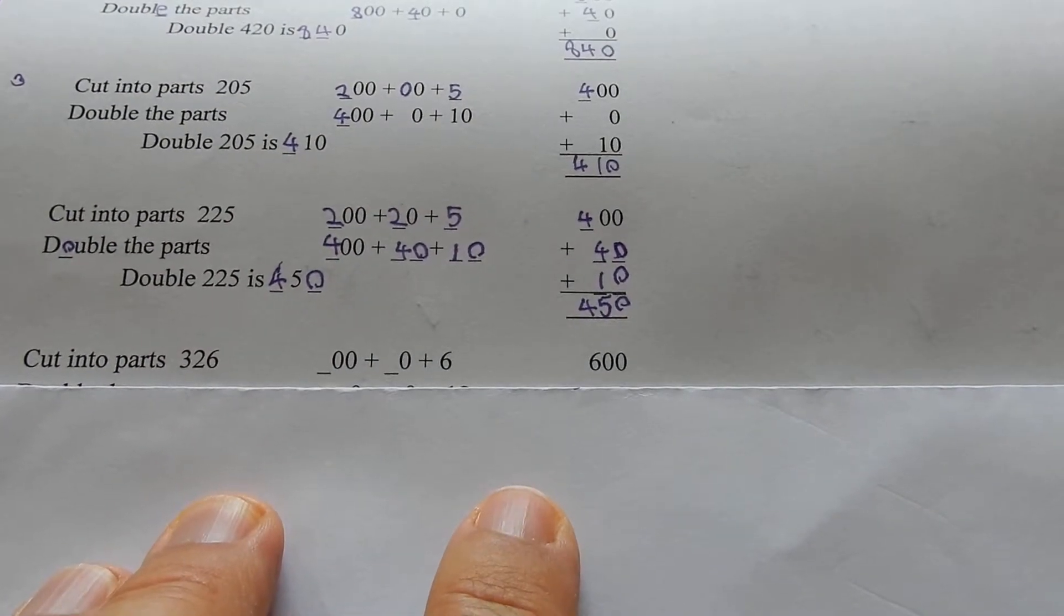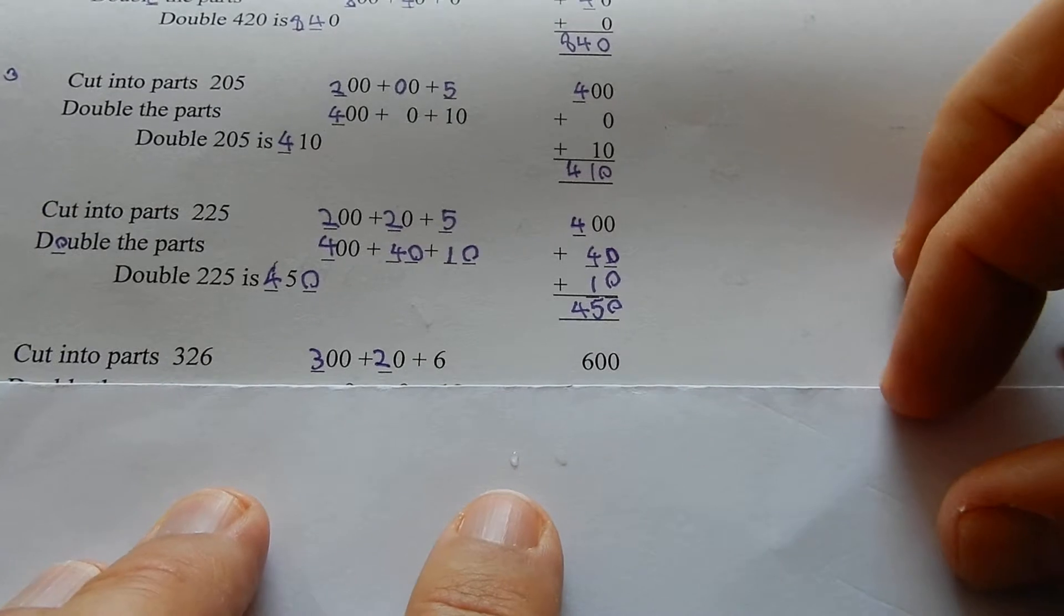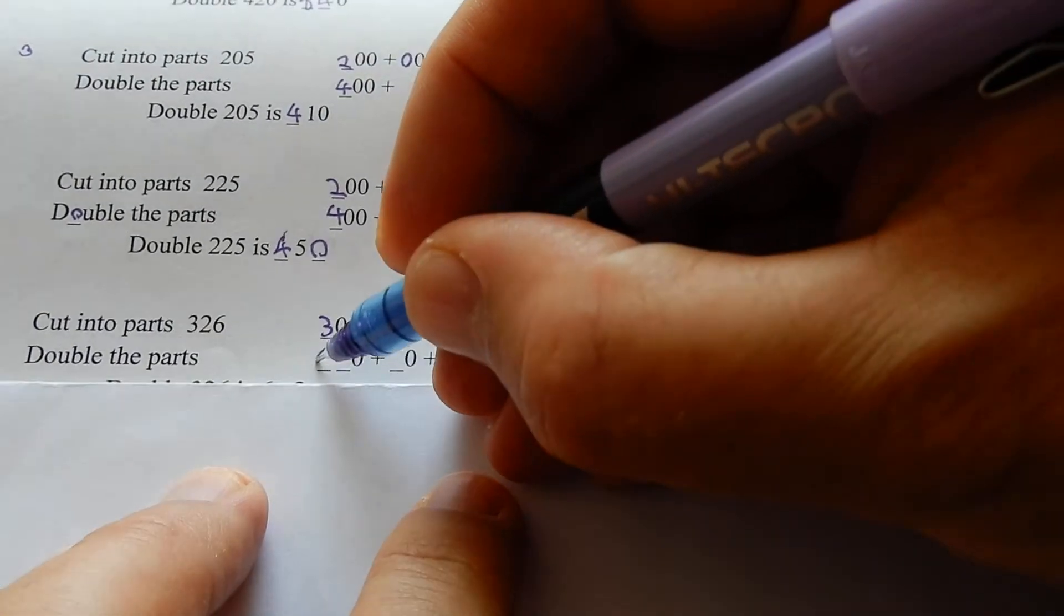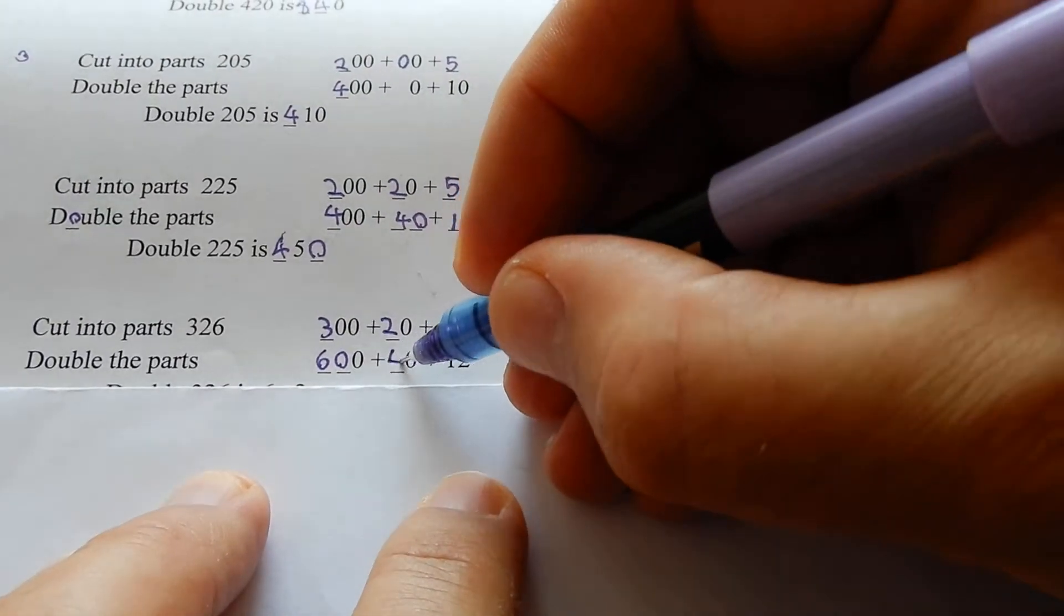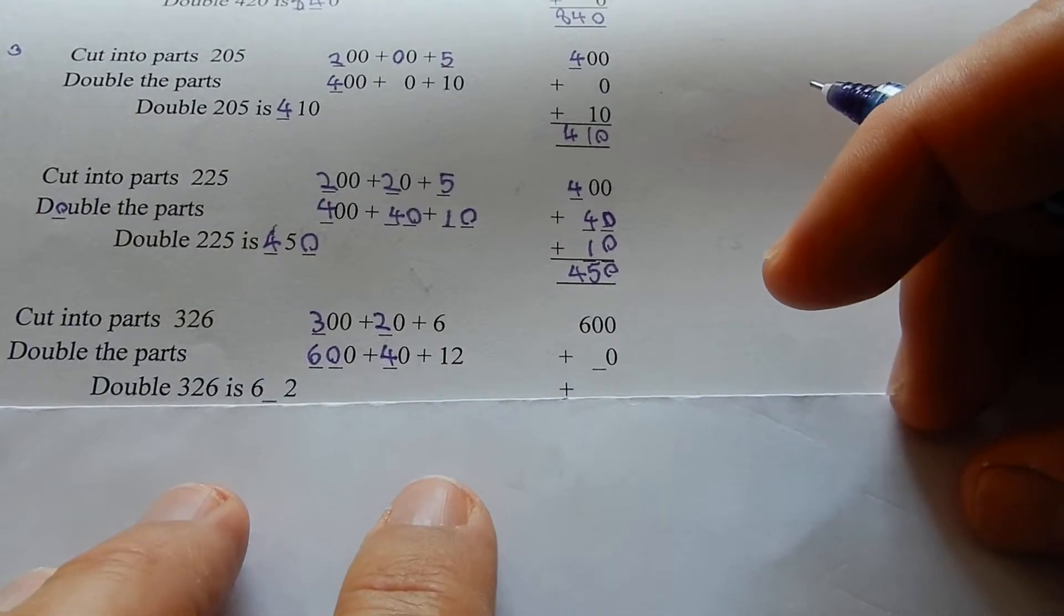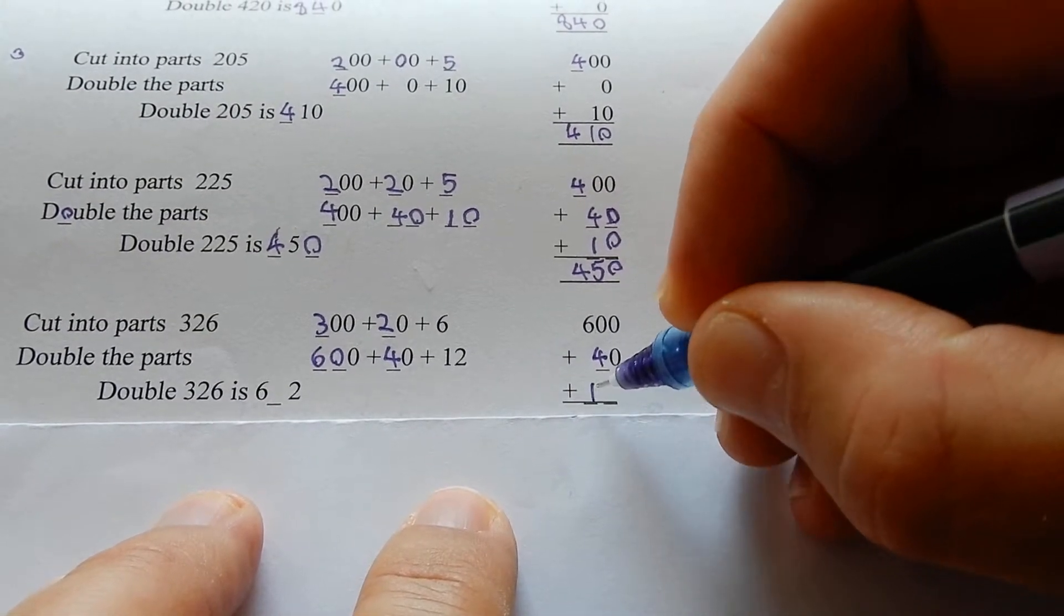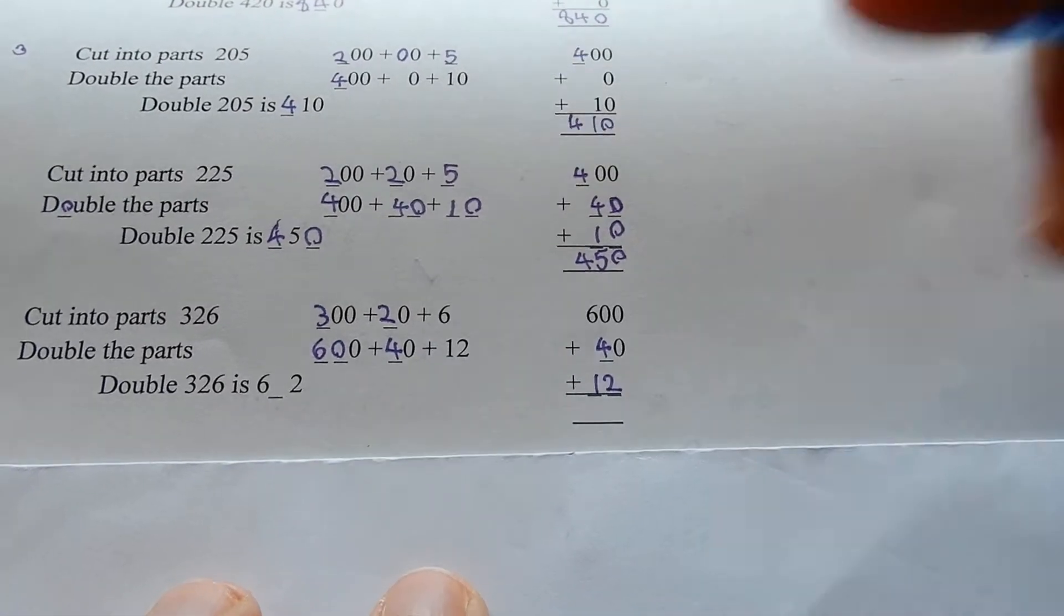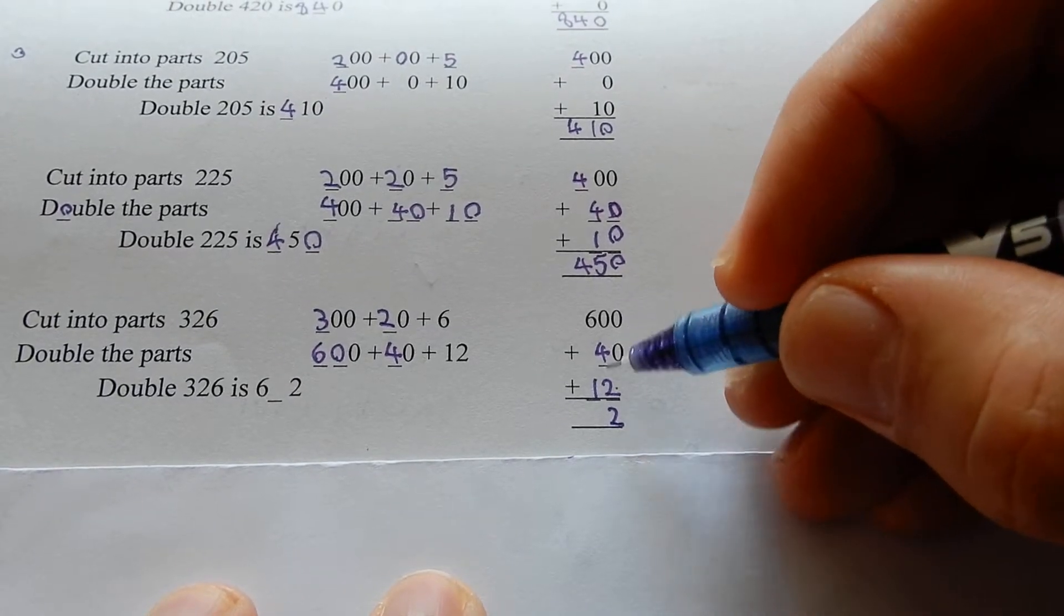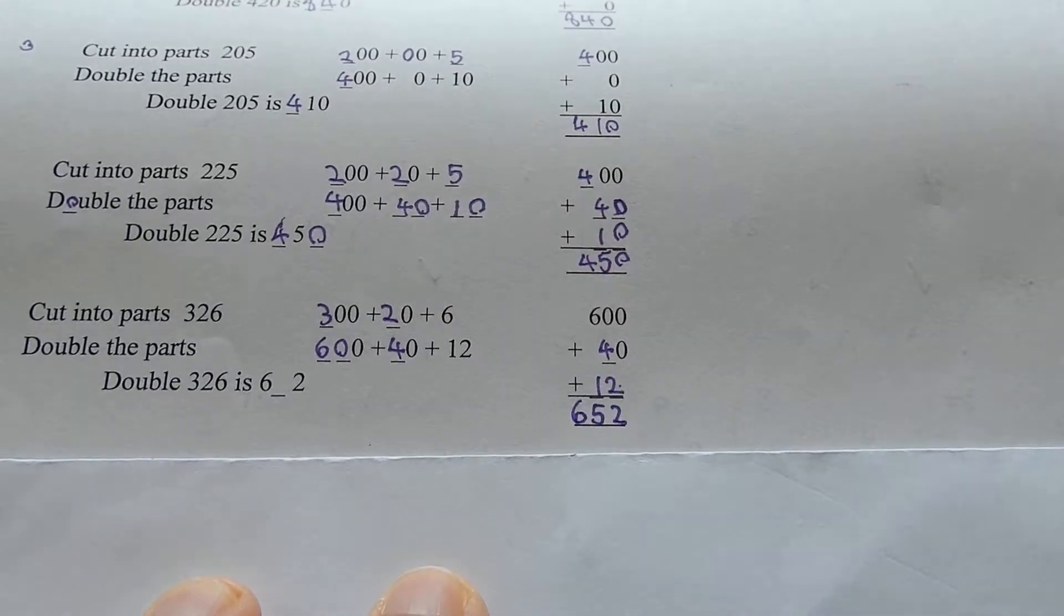326: cut it into parts, 300 plus 20 plus 6. Double each part: double 300 is 600, double 20 is 40, double 6 is 12. Now you can see numbers over 5 and over cause trouble. Add those together: 600 plus 40 plus 12. 0 plus 4 plus 1 is 5, and there's the 600. 652.